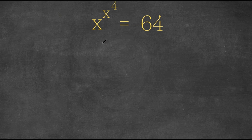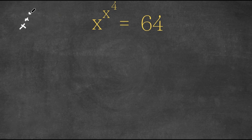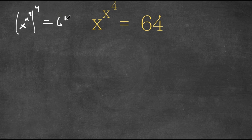So what I'm first going to do is take the fourth power on both sides. So we have x to the power of x to the power of 4, now to the power of 4, equals 64 to the power of 4.